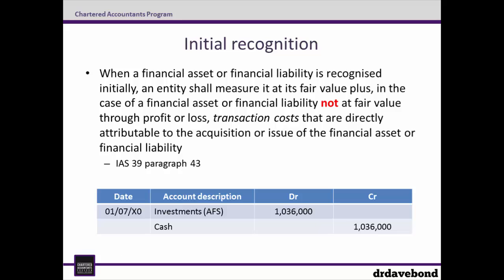This means the total initially recognized is $1,036,000. As an entry, we end up with debit investment available for sale $1,036,000 and credit cash $1,036,000.